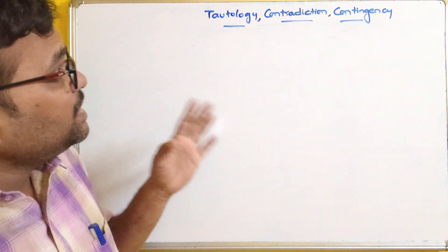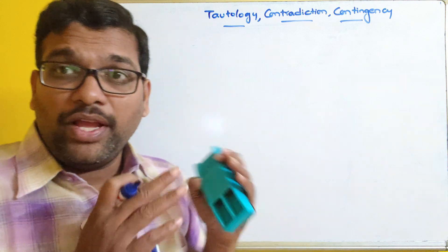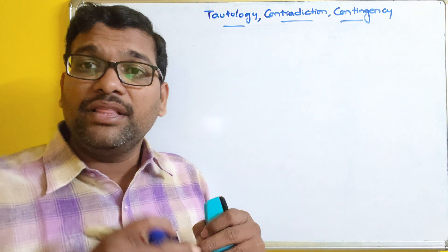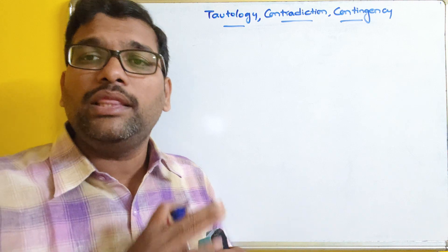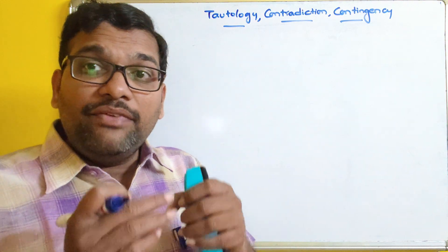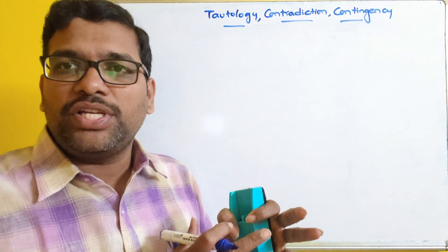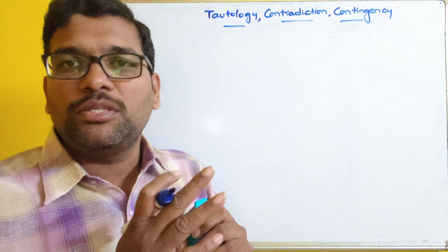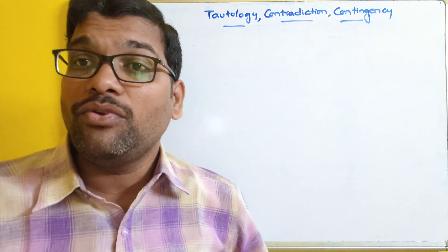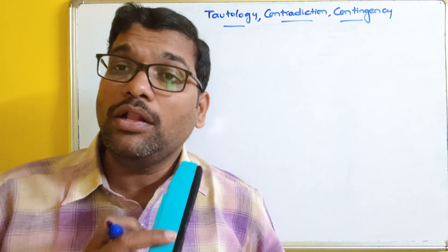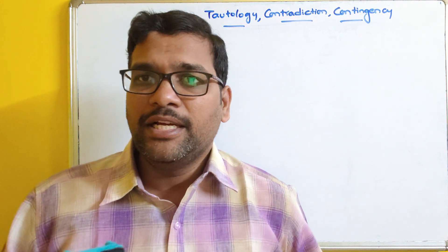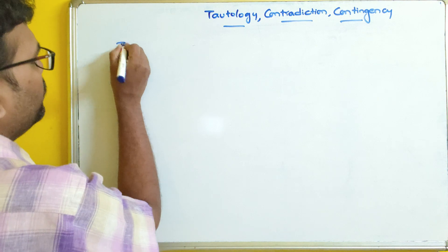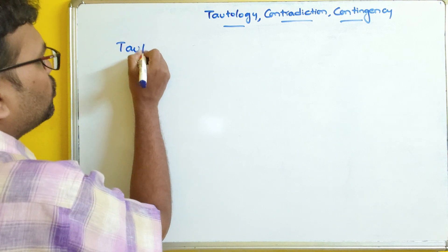Now we will see what is a tautology. We have already seen the truth table, which has truth values for all possibilities. If there are n number of propositions in our statement formula, then 2^n possibilities will be there and we have to find the truth value for all 2^n possibilities.